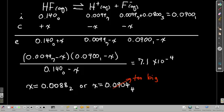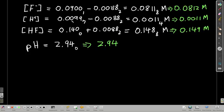Now we can figure out the new equilibrium concentrations of everything in there and the new pH. When we do that, concentration of fluoride ion, it's 0.0812 or so. Hydrogen ion, 0.0011. And hydrofluoric acid, 0.149. And the new pH is 2.94.